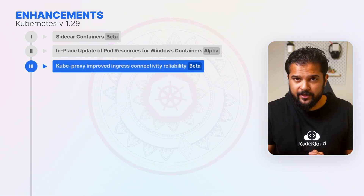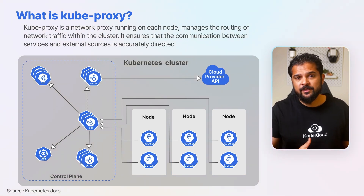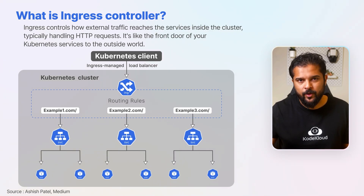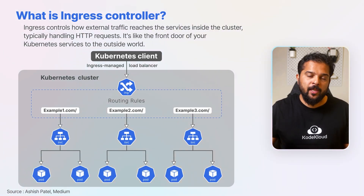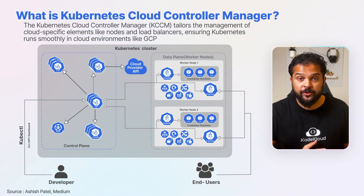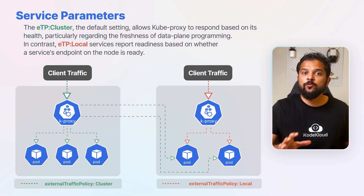The next enhancement is improving the reliability of ingress connectivity serviced by kube-proxy. In Kubernetes, networking is orchestrated by several key elements. kube-proxy is a network proxy running on each node that manages routing of network traffic within the cluster, ensuring communication between services and external sources is accurately directed. Ingress controls how external traffic reaches services inside the cluster, typically handling HTTP requests — it's like the front door for Kubernetes services to the outside world. The Kubernetes cloud controller manager (KCCM) tailors management of cloud-specific elements like nodes and load balancers. There are two types of services based on health checks: external traffic policy cluster and external traffic policy local.